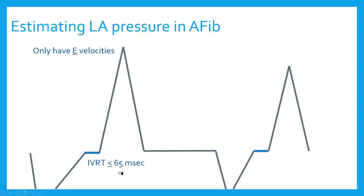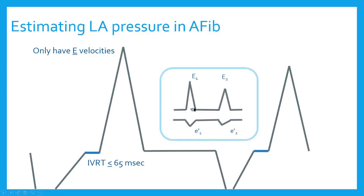Before I even do that, I can look at the isovolumic relaxation time. As we talked about before, that shortens the worse my grade of diastolic dysfunction is. So if I have grade 3 or grade 4 diastolic dysfunction, I can look at my isovolumic relaxation time, and if it's really low — less than 65 milliseconds — that might tell me my left atrial pressure is high. The other trick is I can try to get a time interval to match my E and E-prime. Most patients in AFib are not so erratic that the heart rate is jumping from 50 to 170 in any one-minute span. You can find a time interval that matches your pulse wave mitral inflow velocities and your tissue Doppler velocities.